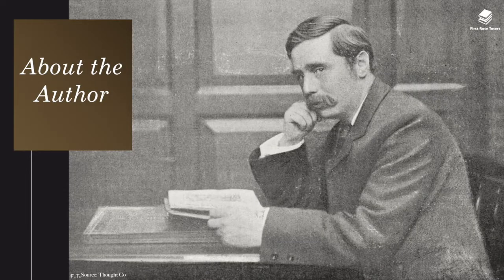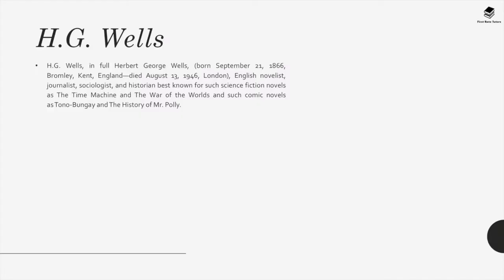Moving on to a short biography of H.G. Wells. H.G. Wells, in full Herbert George Wells, was born on 21st September 1866 in Kent, England, and died on 13th August 1946 in London. H.G. Wells was an English novelist, journalist, sociologist and historian, best known for such science fiction novels as The Time Machine and The War of the Worlds, and such comic novels as Tono-Bungay and The History of Mr. Polly.